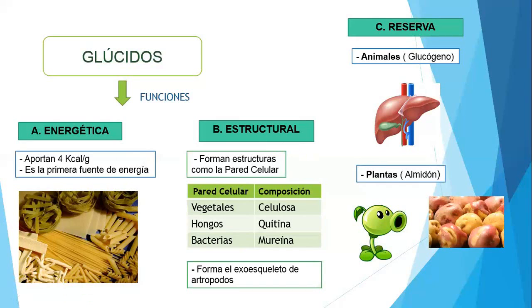En la función estructural, algunos glúcidos van a formar estructuras como la pared celular. La mínima parte era un monosacárido; la cadena larga de monosacáridos se llama polisacárido. La pared celular de los vegetales está compuesta por celulosa. La pared celular de los hongos está formada por quitina, que es un polisacárido. Y la pared celular de las bacterias forma un polisacárido llamado mureína o peptidoglucano.